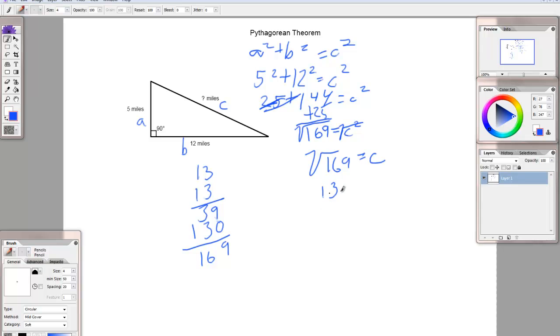So, 13 equals c. c equals 13. So, now you know that this side is 13 miles long.